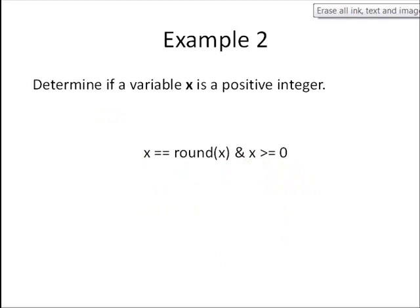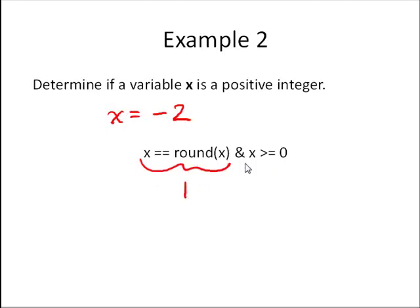Let's try another one. x equals negative 2. Is x equal to round x? Yes, true. Is x greater than or equal to 0? No, false. 1 and 0 gives false.